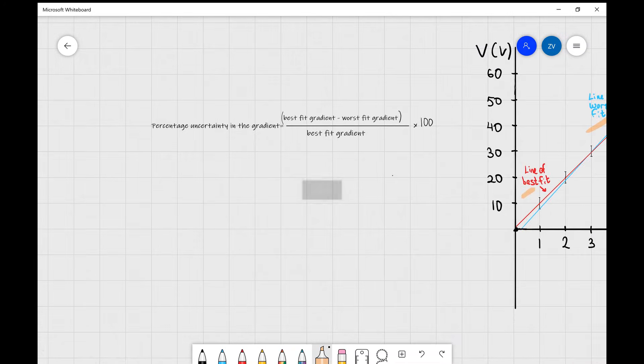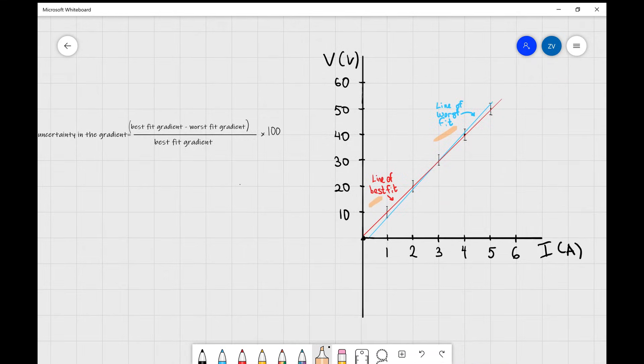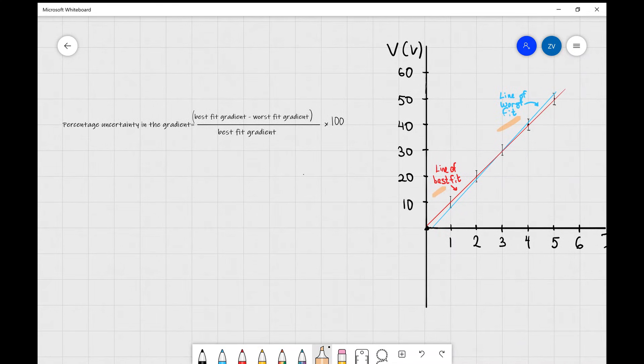Okay folks, so just to recap what we've learned today. We've learned that the line of best fit goes right through the center or as close as possible through the center of all those points. And the line of worst fit goes from the bottom of the bottom error bar to the top of the top error bar. And additionally we can find the percentage uncertainty in the gradient with this formula.